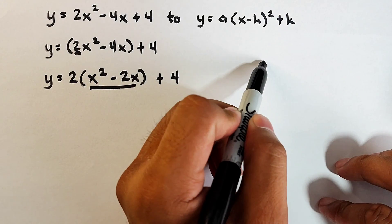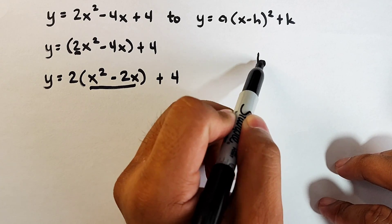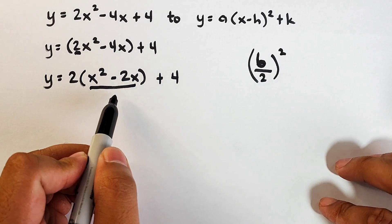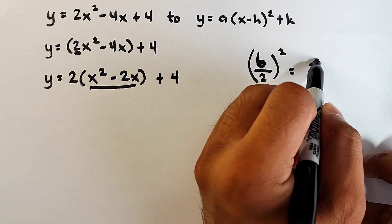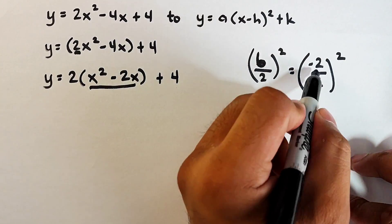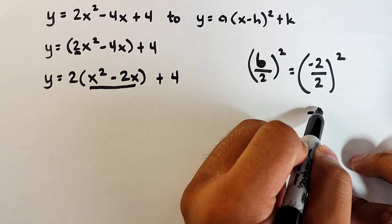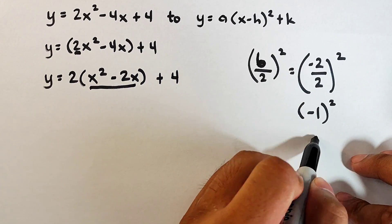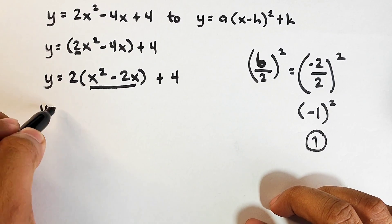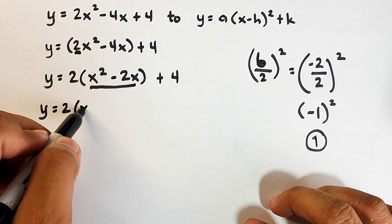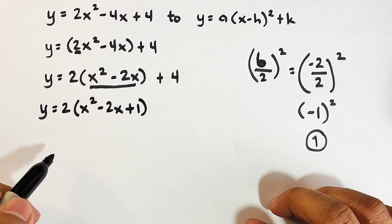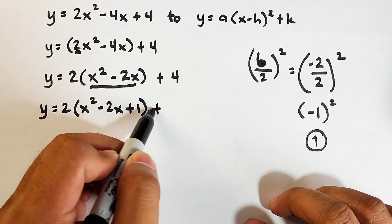So what's next here is gagawin natin yung perfect square trinomial. Again, using the formula, b over 2 squared. Ang b natin is negative 2. So that is negative 2 over 2 and then squared. So what we have here is negative 2 divided by 2 is negative 1. Then squared. And the answer is positive 1. Ito ngayon yung lalagay natin dito. So we have y equals 2 times x squared minus 2x plus 1 to make it a perfect square trinomial. Then plus 4.